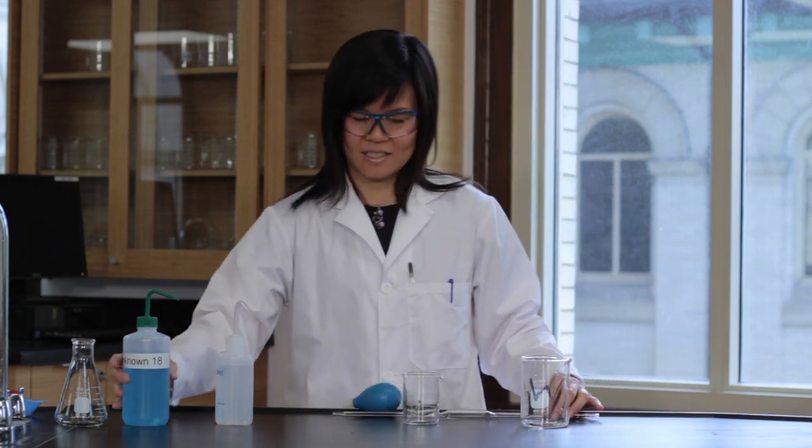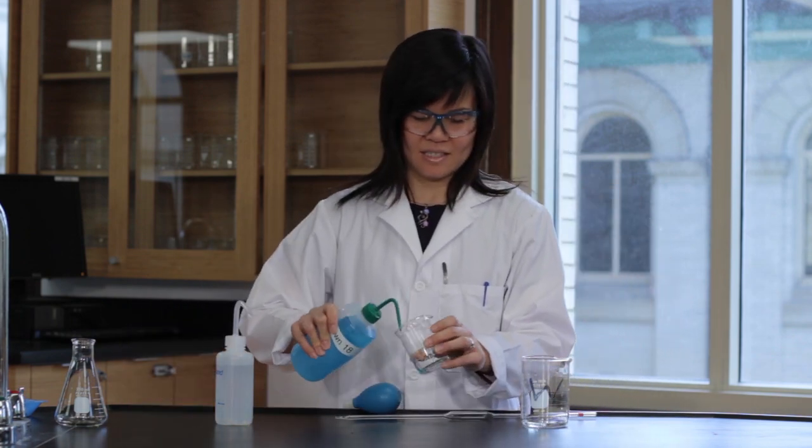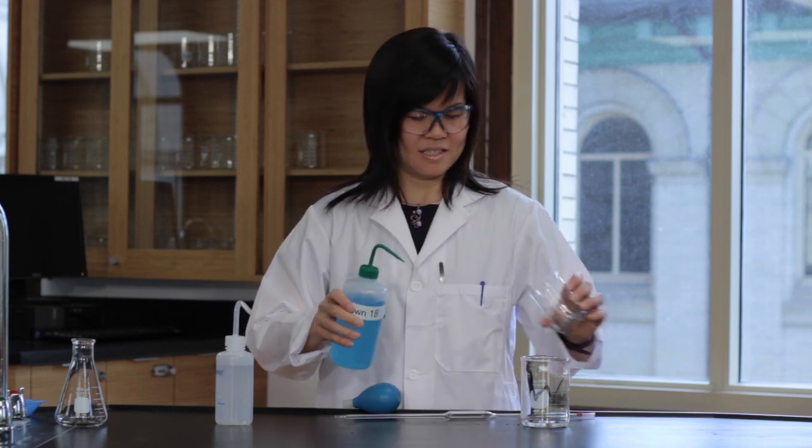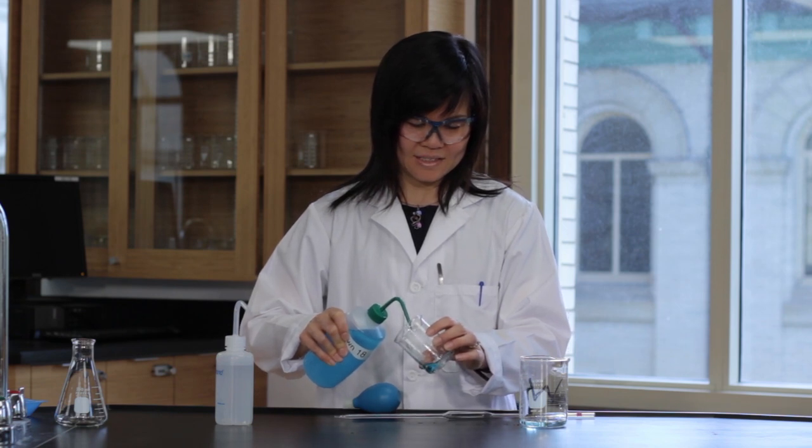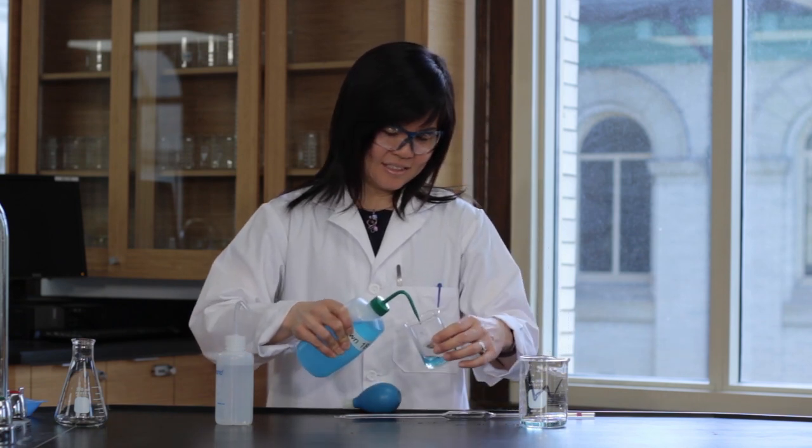Now rinse a small clean and dry beaker with a small amount of the solution to be pipetted. Discard the rinse. Pour approximately 50 milliliters of the solution into the beaker and rinse the pipette twice with a small amount of the solution.